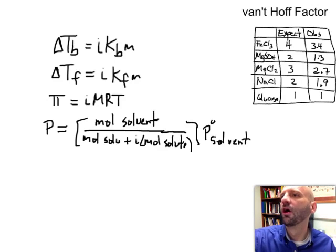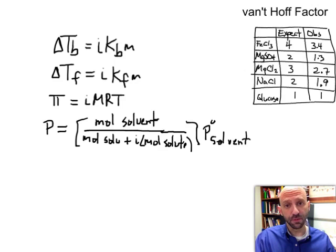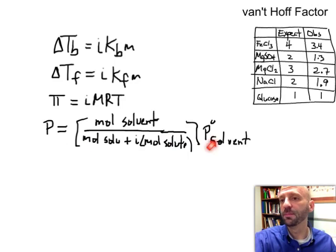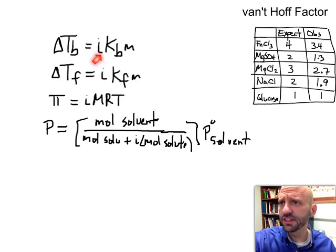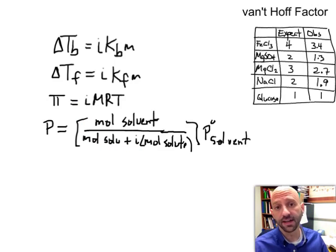So what you see here are the four different colligative properties that we've talked about. Vapor pressure lowering, osmotic pressure, freezing point and boiling point changes. And if you look closely, you see that I've included a new variable, namely the letter I. This is the van't Hoff factor.